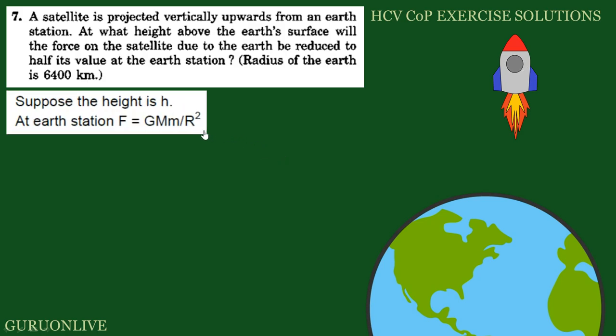First, force F is equal to GMm by R². Capital M means mass of Earth, small m means mass of the rocket. R is the distance between these two objects.